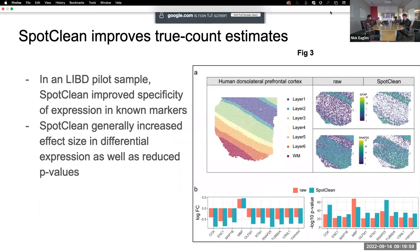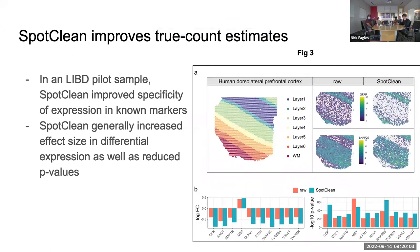Once they've introduced all of that, they present SpotClean, the software tool that will improve or at least partially address this problem. Using one of the LIBD pilot samples, they argue it improves the specificity of expression of known markers. In panel A, they took two markers — GFAP, which I believe is a marker for white matter or layer one, and SNAP25, which I believe marks layers two through six of the DLPFC. They show the raw data and then what it looks like after applying SpotClean. Basically, we get much less expression in each gene where it's not supposed to be expressed, and much more where it is supposed to be expressed — what they call increased specificity.